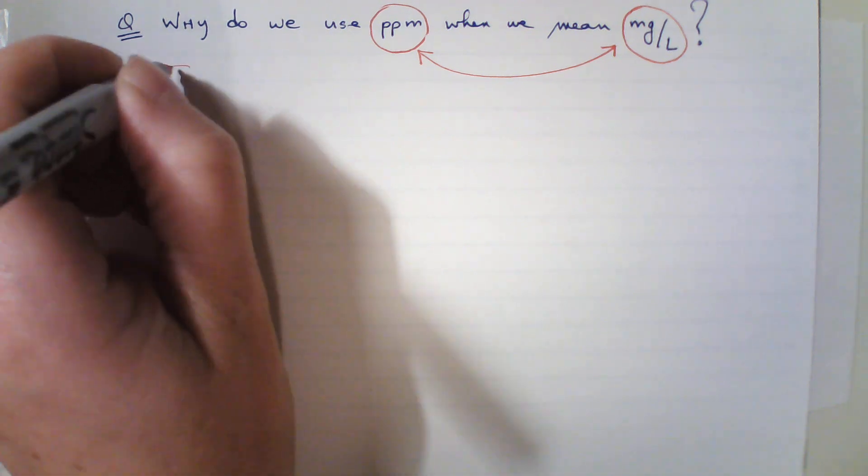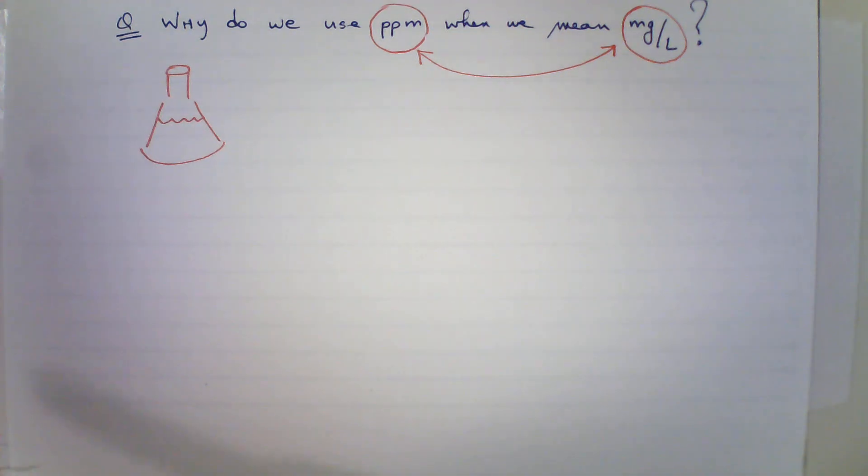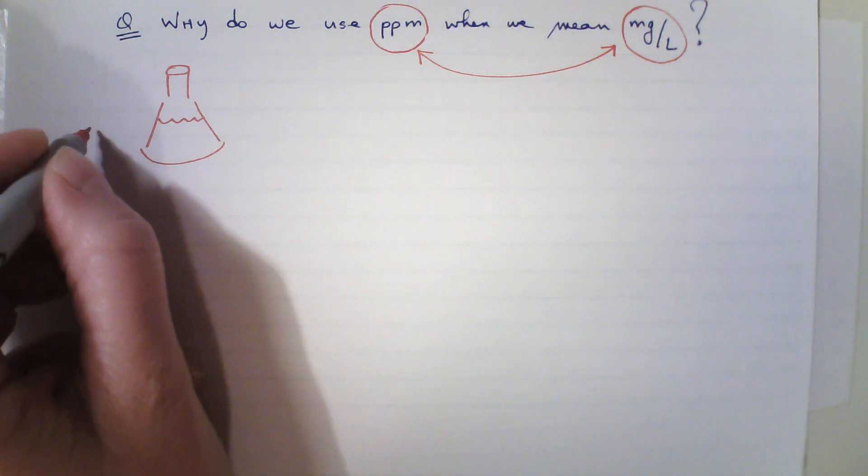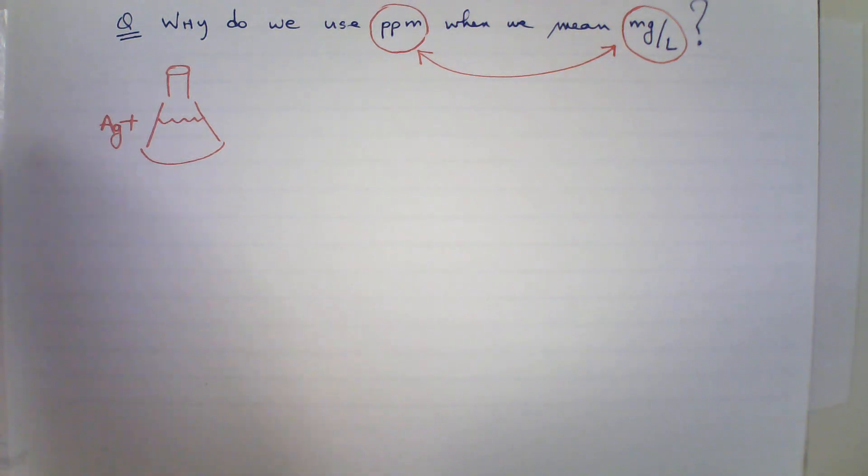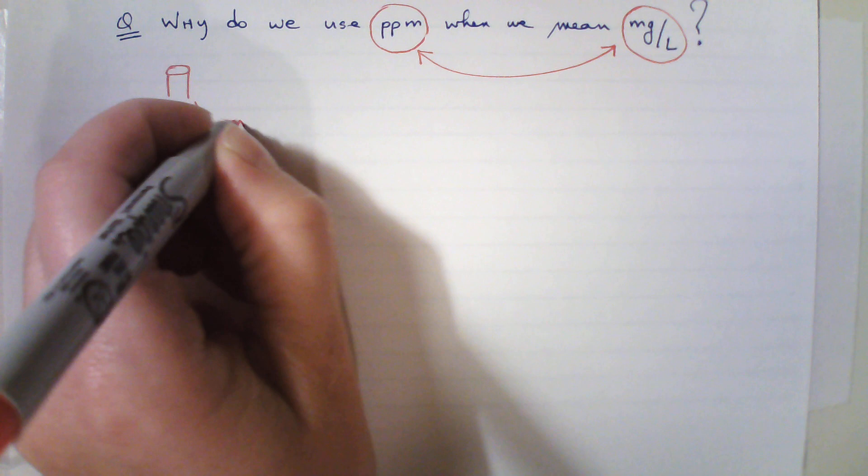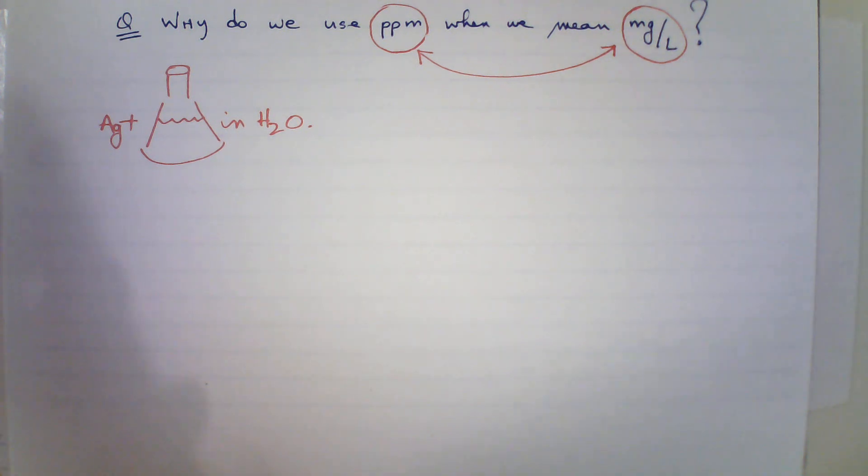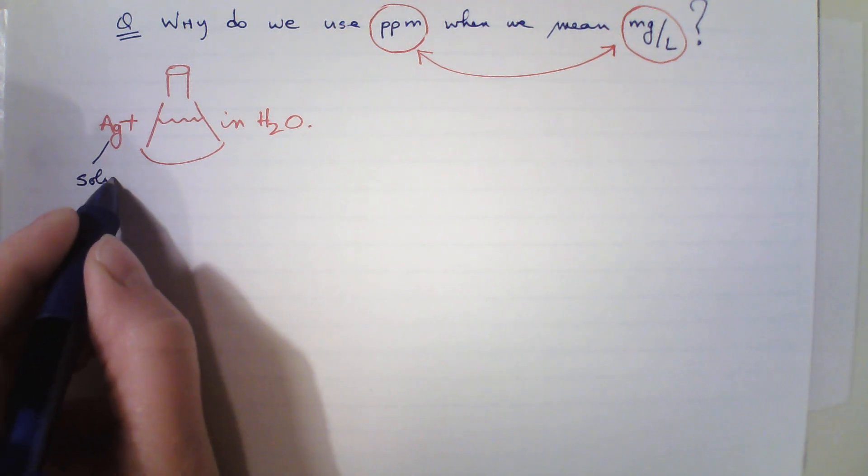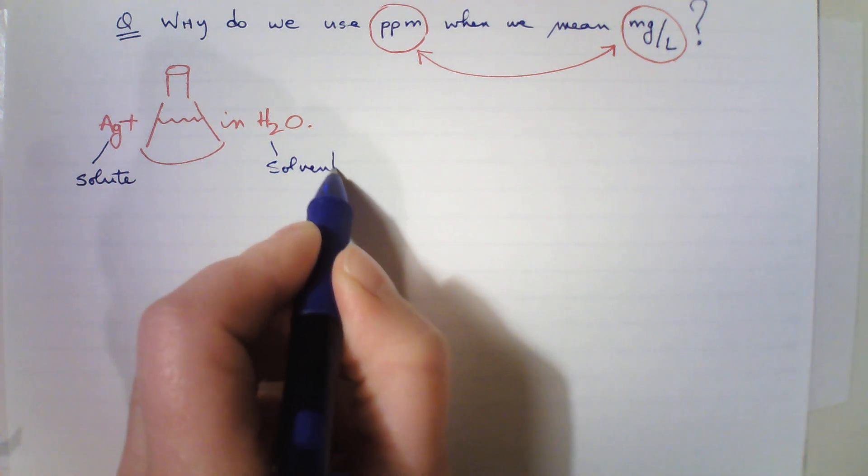In a dilute solution, draw my little Erlenmeyer flask here, I have a solution in there, and let's say that I have a component that is Ag+, a silver ion in H2O. So that's my solute, silver ion, and this is my solvent, water.